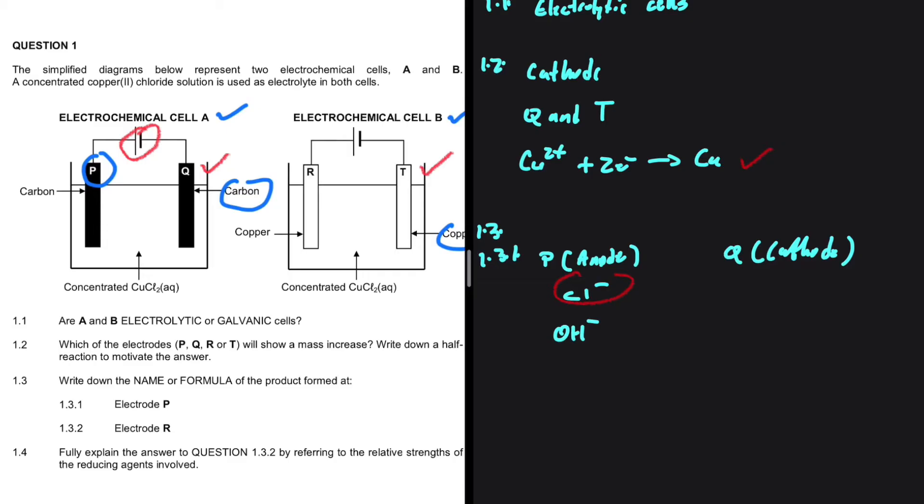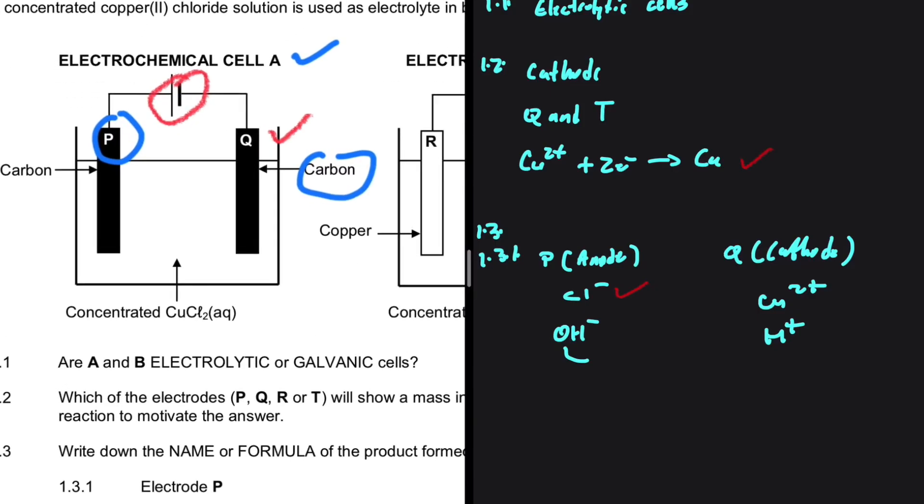And then the cations, positive ions that will move to the cathode. We have Cu2+ and H+. The question here now is between Cl minus and OH minus, what undergoes oxidation? Cl minus is going to undergo oxidation. The only way OH minus would undergo oxidation is if instead of using concentrated CuCl2, we use dilute.